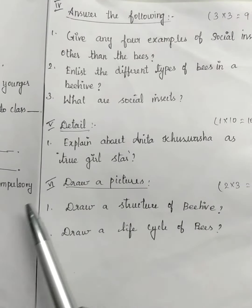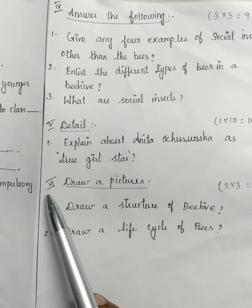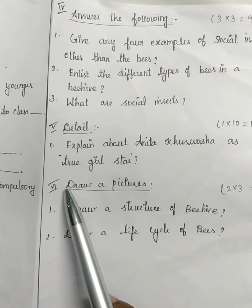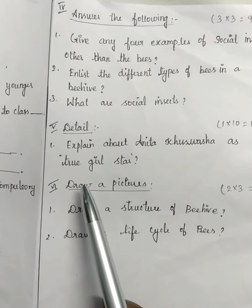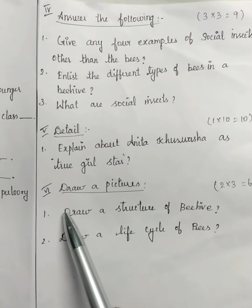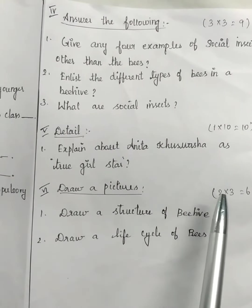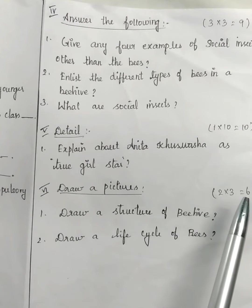In the next Roman letter, the 6th Roman letter, draw a picture. There are 2 questions. Each question carries 3 marks, totally you get 6 marks.